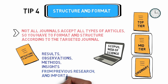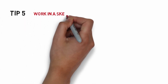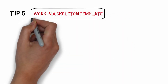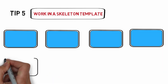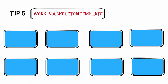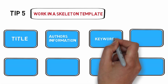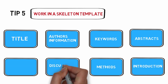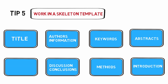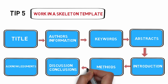Before you start writing, gather all content such as your results, observations, research method, insights from previous research, and importantly your references. Tip number five is to start writing using a skeleton template, which you can find on the journal's website. Usually sections of an article include title, information about authors, keywords, abstract, introduction, methods, discussion, and conclusions. You can also mention acknowledgements if there are any, and then easily add content in each section as you progress.